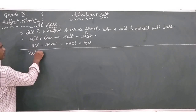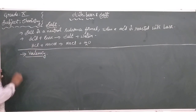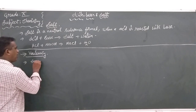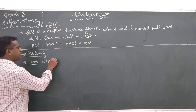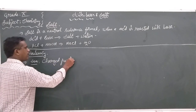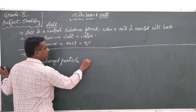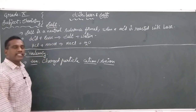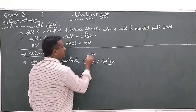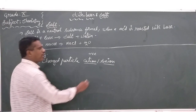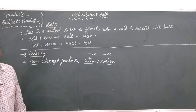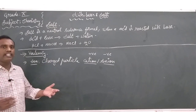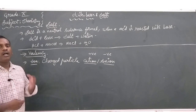The combining capacity of an element is called its valence. From this valence concept, we get ions. What is an ion? An ion is a charged particle. It may be a cation or it may be an anion. These ions are going to be segregated into a table based on their valence.